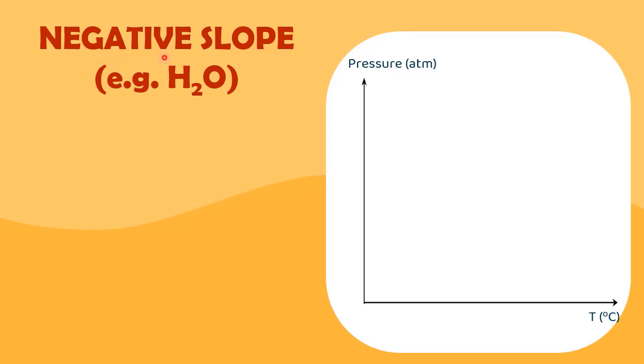Negative slope phase diagram is usually exhibited by water molecules. The triple point for water is at 0.01 degrees C and 0.06 atm, while the critical point is at 374 degrees C and 218 atm.